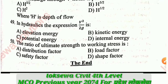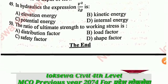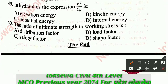Question number 49: The energy associated with the motion of flow is: A - kinetic energy, B - kinetic energy, C - potential energy, D - internal energy. The correct answer is kinetic energy.